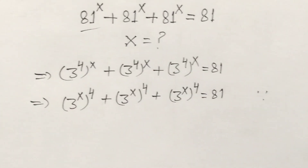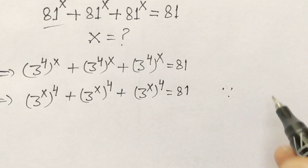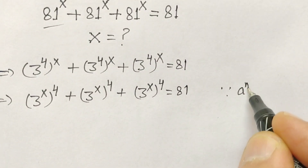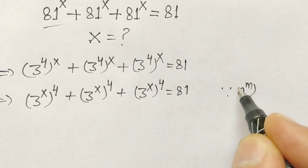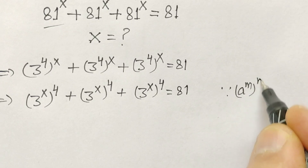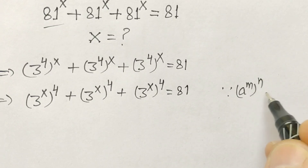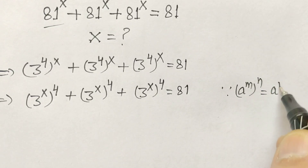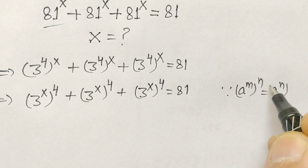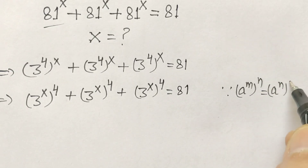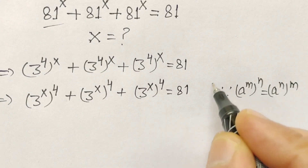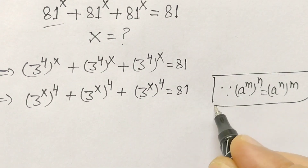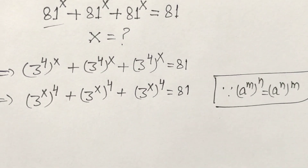Because a to the power m to the power n is equal to a to the power n to the power m.